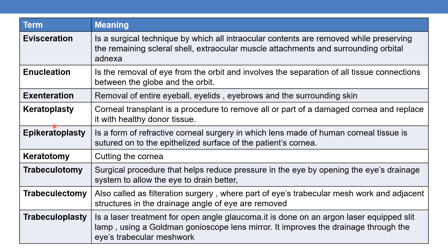The next term is keratoplasty. Kerato means cornea, so keratoplasty is commonly called a corneal transplant. It is a procedure to remove all or part of the damaged cornea and replace it with healthy donor tissue.